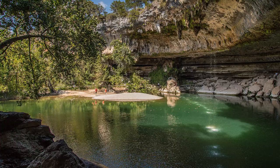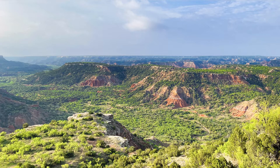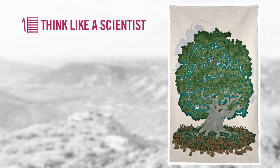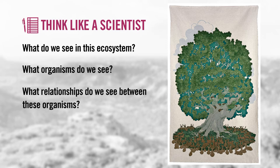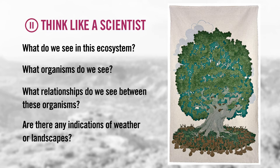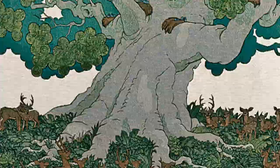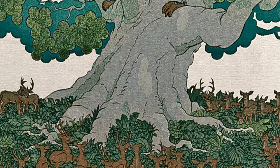In Texas, we have ecosystems like the vast hills and springs here in Austin, the far-reaching deserts in West Texas, and the canyons of the Panhandle. What do we see in this ecosystem? What organisms do we see? What relationships do we see between these organisms? Are there any indications of weather or landscapes? Go ahead and pause and respond. Maybe you focused on the branches of the tree — are those birds using the branches as support for their nests? Or were you paying close attention to the roots of the tree, where they gather nutrients from the soil?